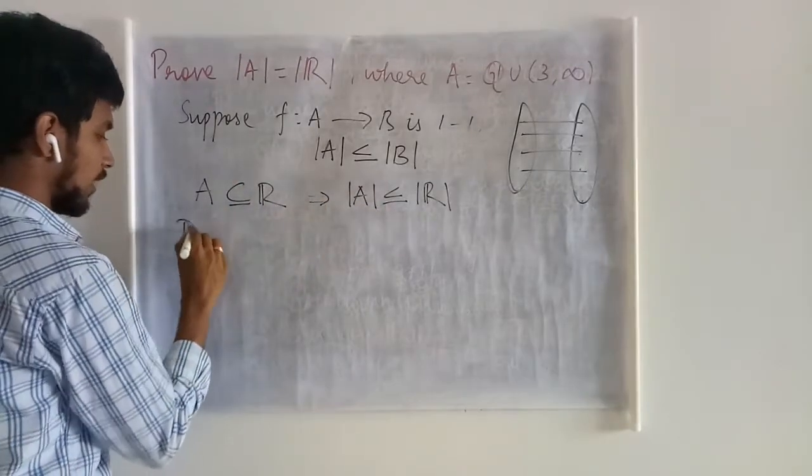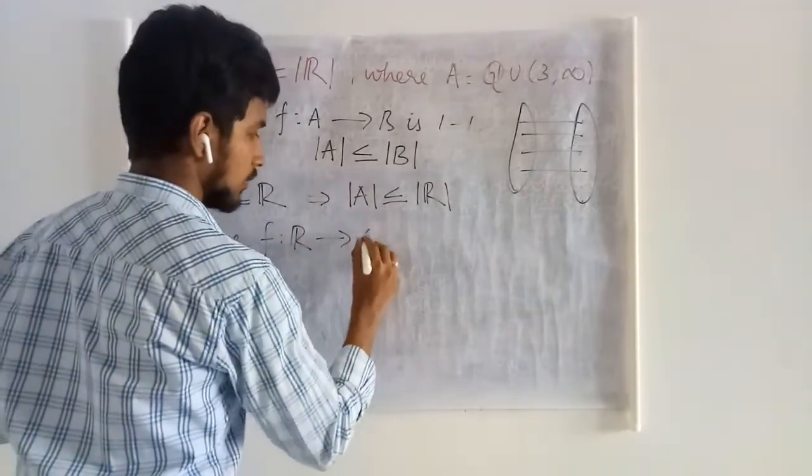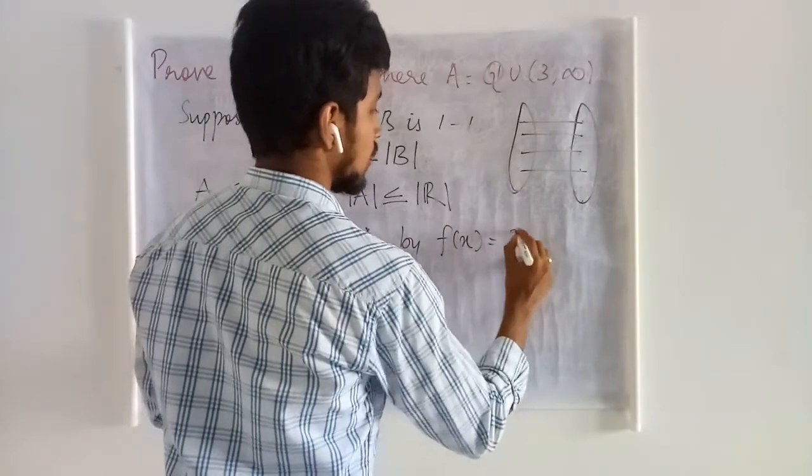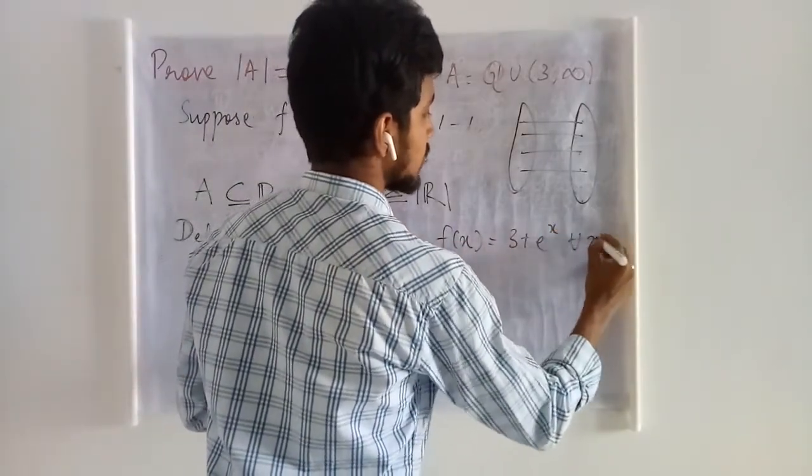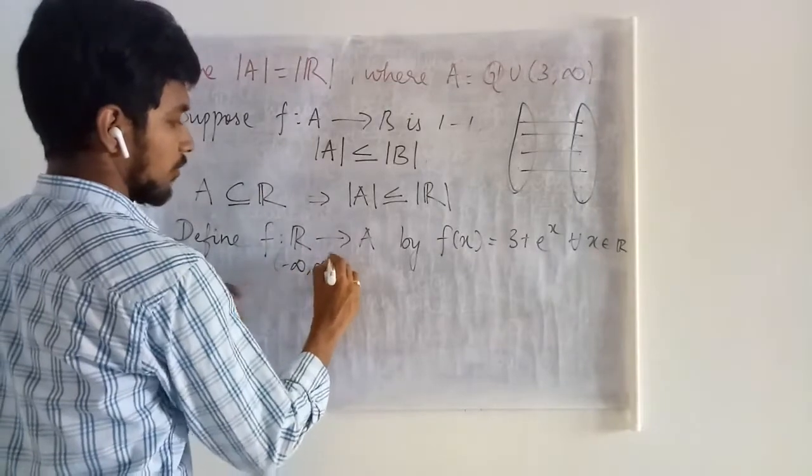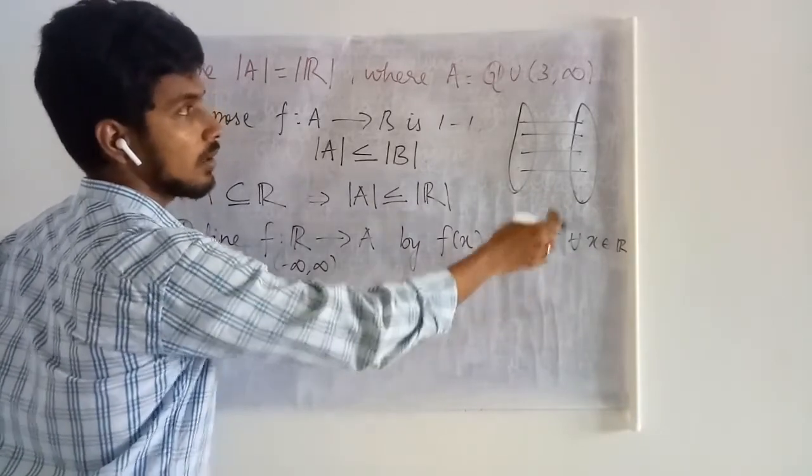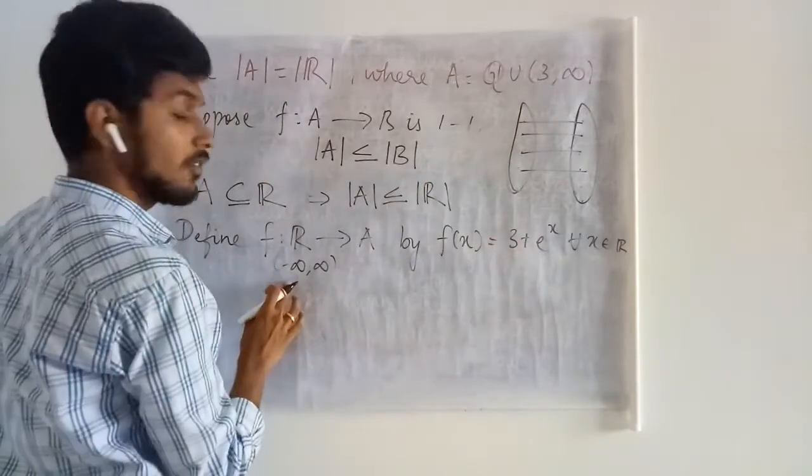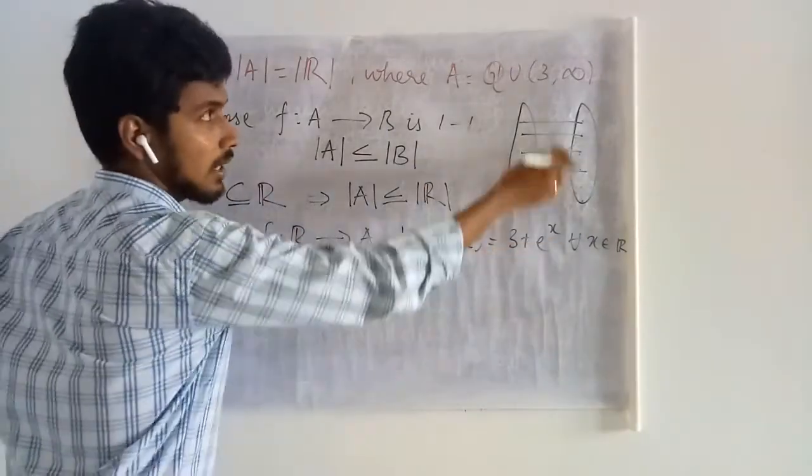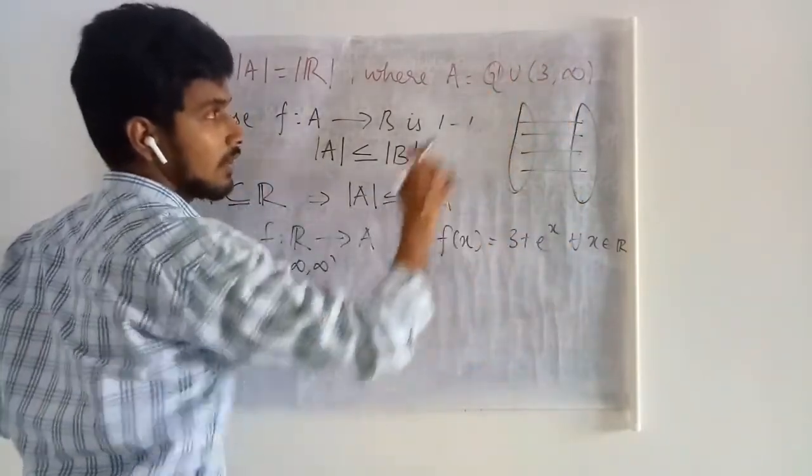Now, we are going to define a map, some map F from real numbers to A, by means of F(x) = 3 plus e power x for all x in R. What is your R? Your R is minus infinity to infinity. When you substitute minus infinity in the place of x, you will get 0, right? So 3 plus 0, that is going to be simply 3. But minus infinity is never approached, so the value very next to minus infinity will be approached and that is a member of this interval. And whatever maybe the value that you will substitute here, that will land here only.